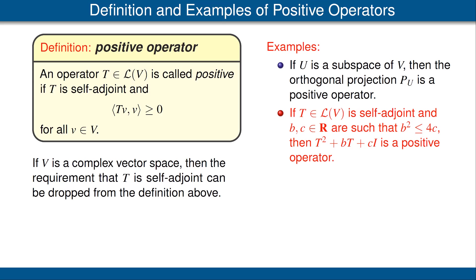Notice the analogy: if we replace T with a real variable x, we can ask when is x² + bx + c always a non-negative number? By the quadratic formula, that happens precisely when b² ≤ 4c.